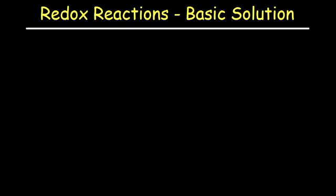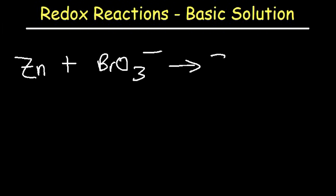Let's start with this reaction. Zinc metal reacts with bromate to produce the zinc 2+ cation and bromide. Under acidic conditions, the first thing we need to do is separate this reaction into two half-reactions.